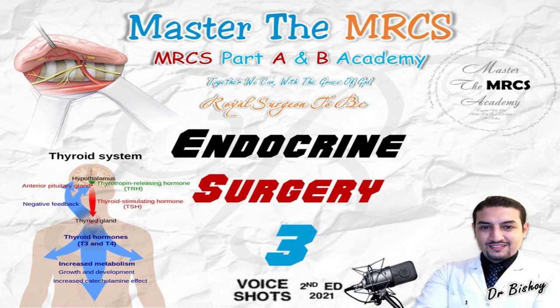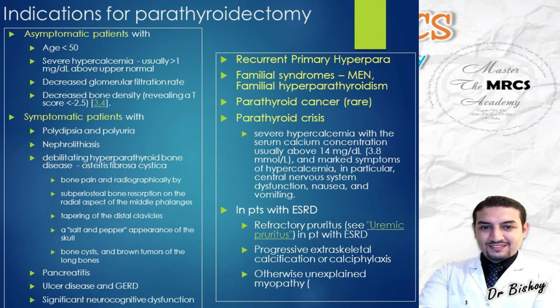If the patient is symptomatic, they will manifest with renal symptoms like polydipsia, polyuria, nephrolithiasis (renal stones), and debilitating hyperparathyroid bone disease like osteitis fibrosa cystica, as well as pancreatitis, ulcerative disease, or significant neurocognitive dysfunction due to the parathyroid adenoma. The parathyroid manifests with bone, moans, stones, and GI symptoms — go for parathyroidectomy.